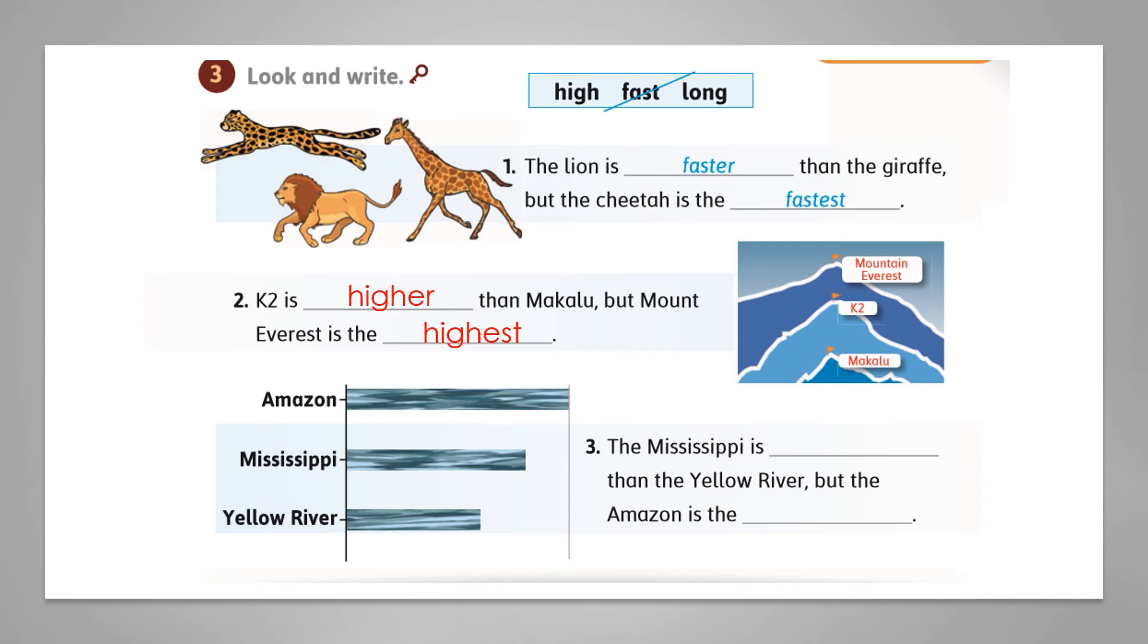We have three rivers: Amazon, Mississippi, and Yellow River. The Mississippi is longer than the Yellow River, but the Amazon is the longest. Fantastic boys, we are brilliant today.